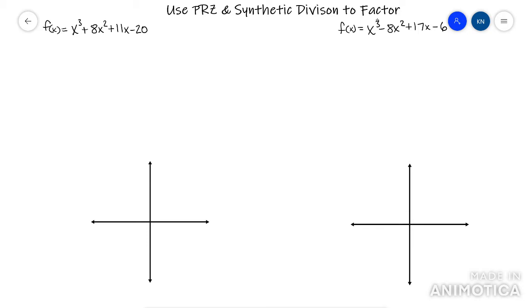Basically if you find a polynomial function that does not factor, you need to immediately list out the PRZ. So if you don't know how to do that, go watch the previous video, but basically I would list out the PRZ of this first.